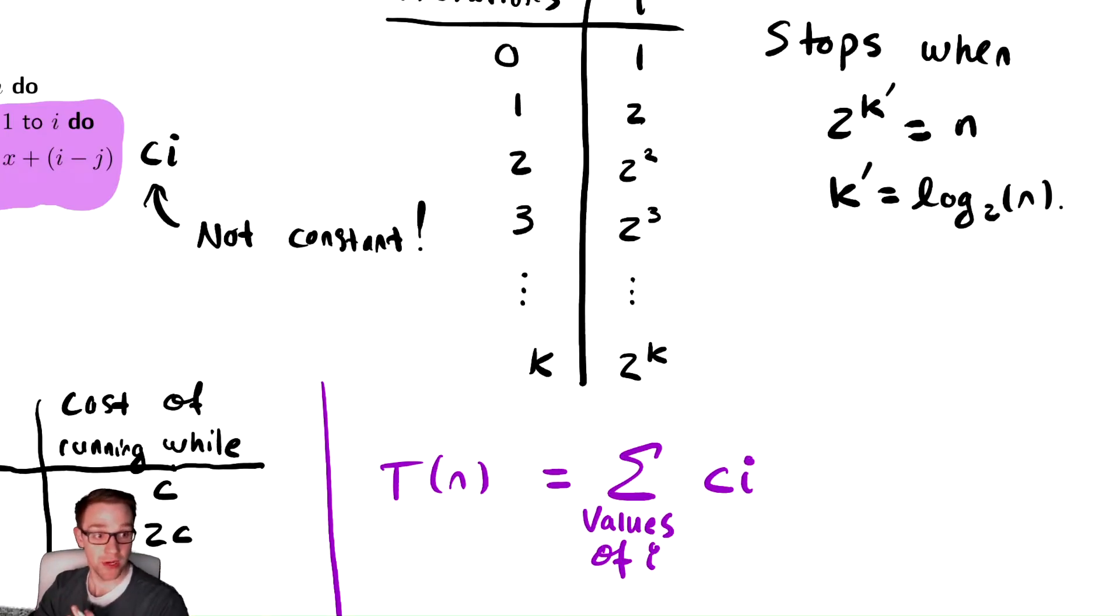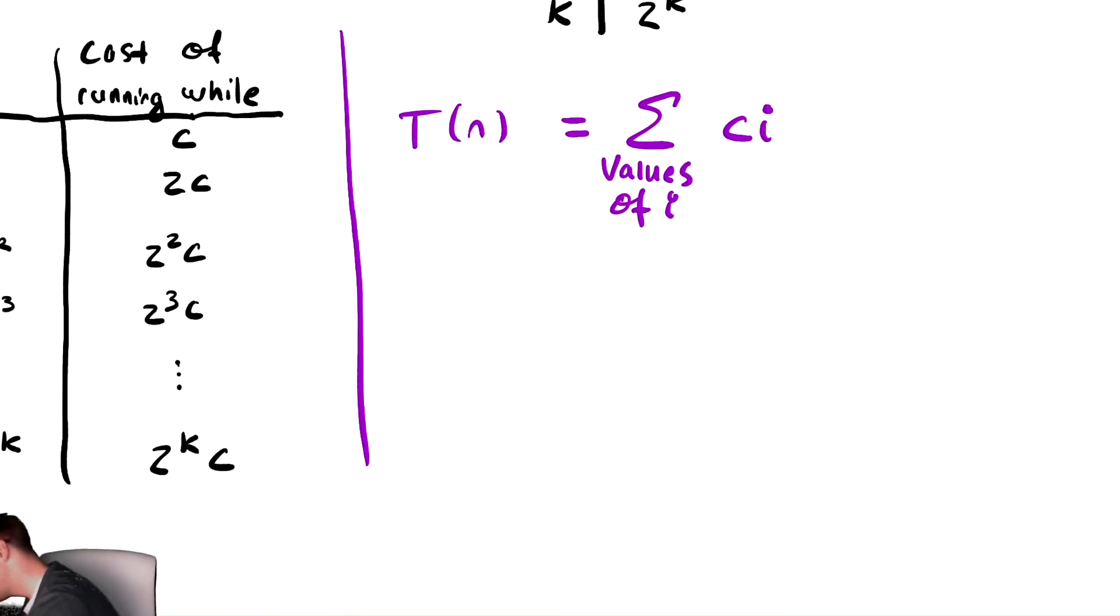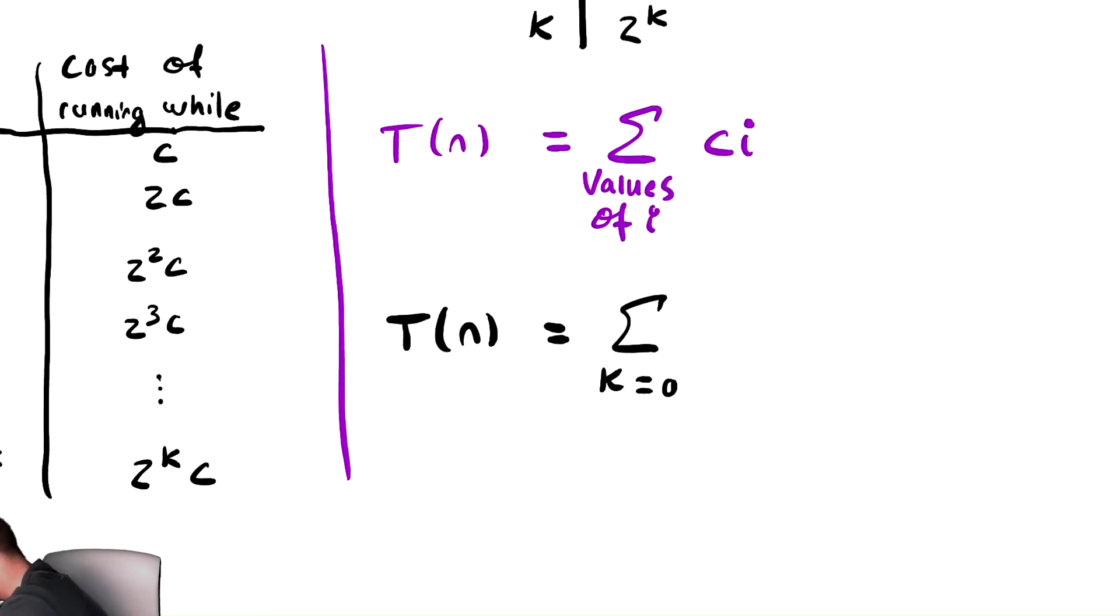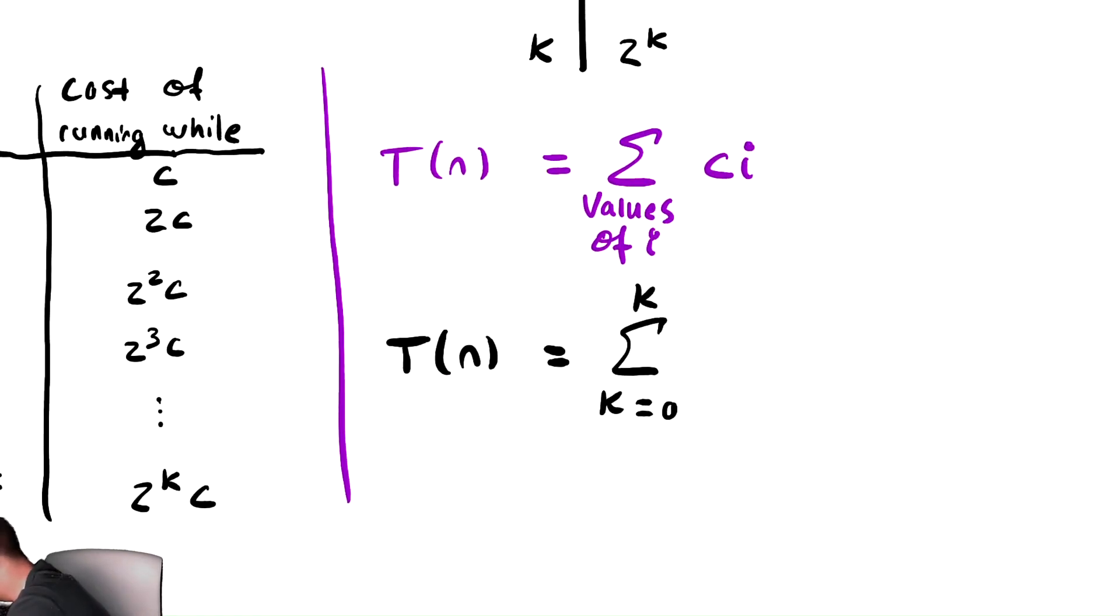And now I'm going to write down the way we're going to compute this running time. This is t of n is equal to the sum from k equals 0, that's the first entry in this table, to k prime, which is what we computed to be the final iteration of c times 2 to the k.